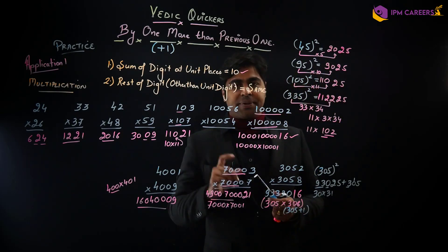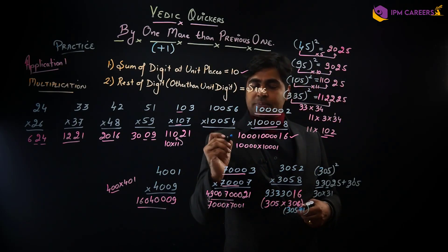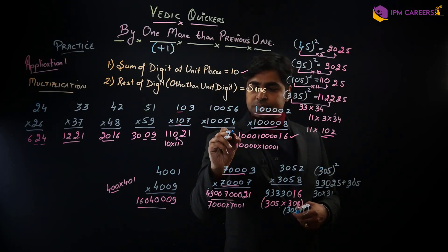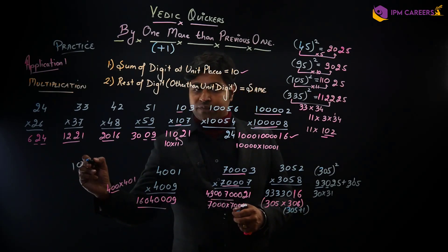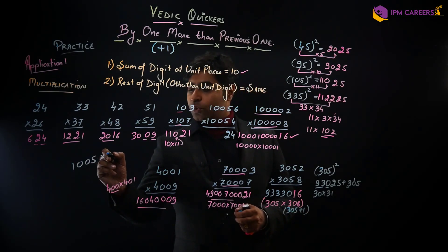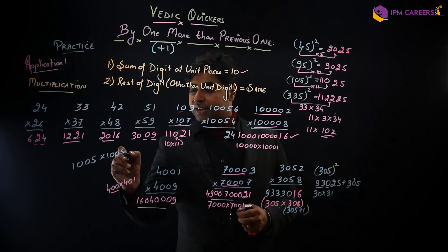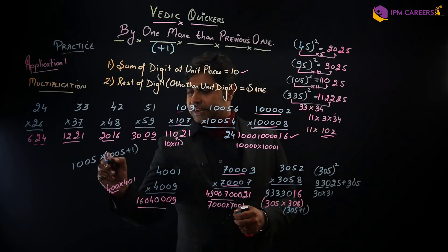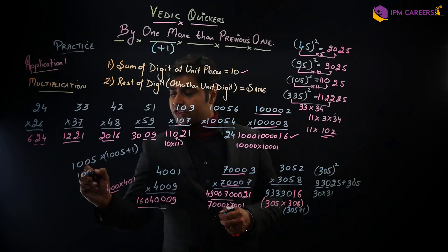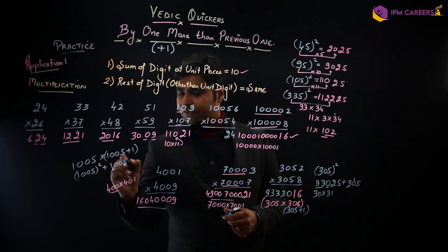Vaisa hi ek aur question hai, yeh bhi hai. Thik hai, so yaha pe 6 plus 4 hota hai 10, toh first root fulfilled, 6 into 4, 24. Ab karna hai 1005 into 1006, jis ko hum kuch aise likh sakte hain. So ye ho jayega 1005 ka square plus 1005. Thik hai.